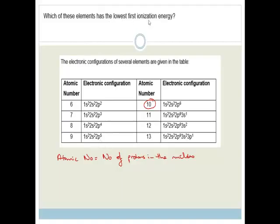Which of these elements has the lowest first ionization energy? Ionization energy is the energy required to remove an electron. Basically what you need to realize is that the further these electrons are away from the nucleus, the easier it is to remove an electron. So we need to look for the atom that's got an electron in the biggest outer energy shell, and that would be number 13. That's furthest away from the nucleus.